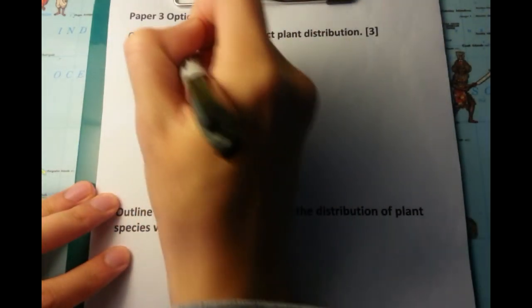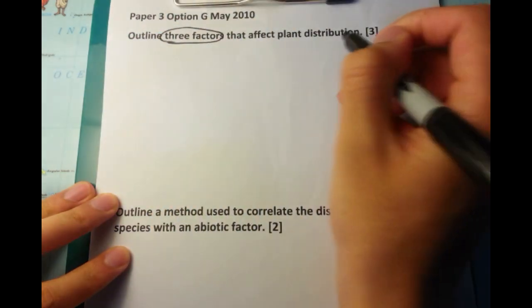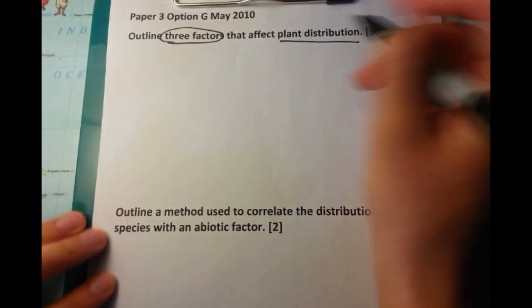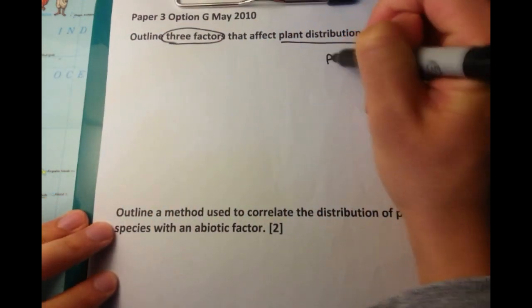Let's look at this particular paper question. Paper 3 Option G from May 2010. We're going to outline three factors that affect plant distribution.